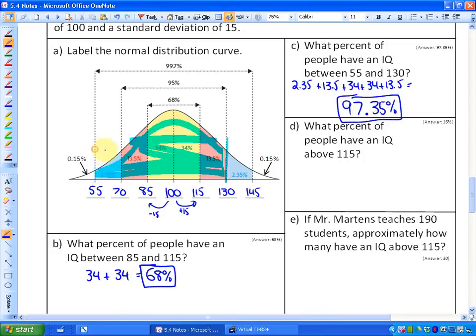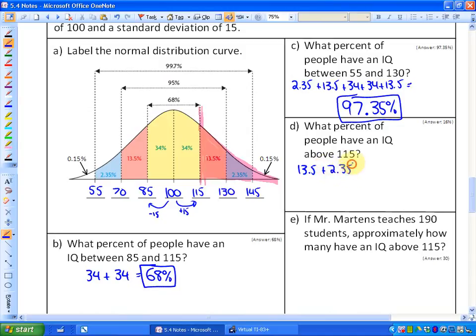Part D, finally, or not finally, there's two more parts to this question. What percent of people have an IQ above 115? So here is an IQ of 115 that I'm highlighting here in pink. So above 115 would be this group of people right here that I'm highlighting in pink. So that would be 13.5% plus 2.35% plus 0.15%. And that would be 16% of people have an IQ above 115.